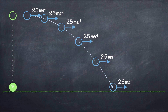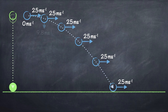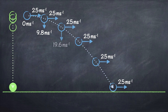Since it was projected horizontally, the initial vertical speed of the ball bearing on the right must be 0 m/s. That's also true for the ball bearing on the left that falls straight down. After 1 second, since the acceleration due to gravity on Earth is 9.8 m/s², its vertical speed will have increased from 0 to 9.8 m/s. Over the next second, the vertical speed will again increase by 9.8 m/s to 19.6 m/s.